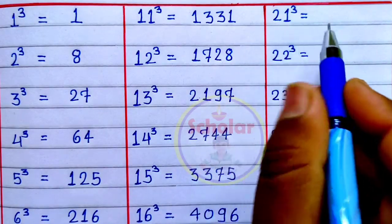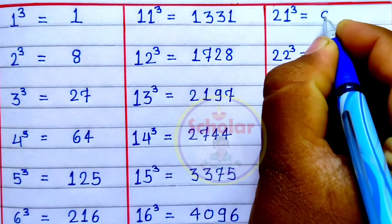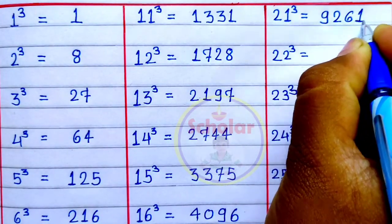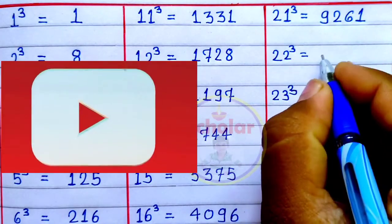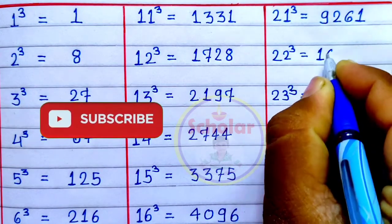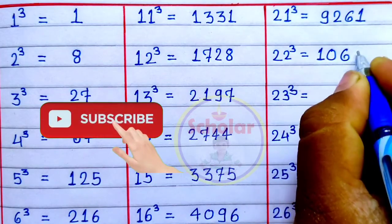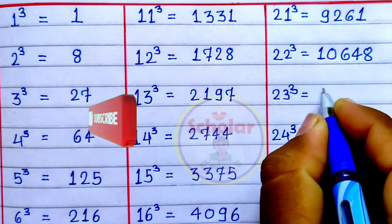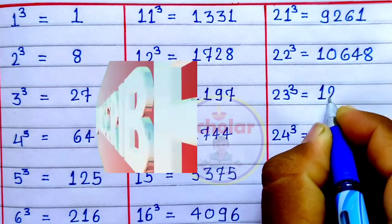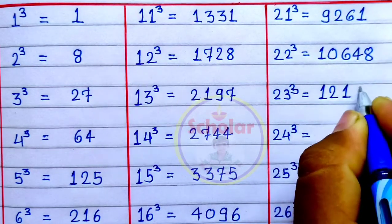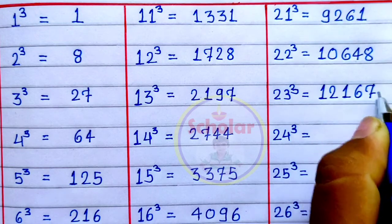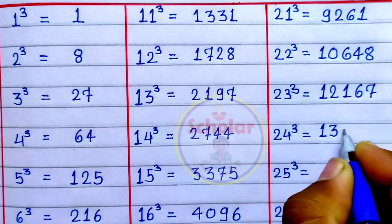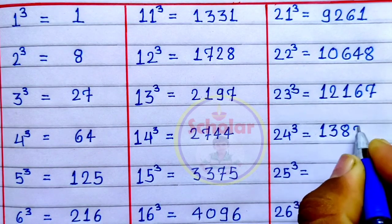Cube of 21 is 9261. Cube of 22 is 10648. Cube of 23 is 12167. Cube of 24 is 13824.